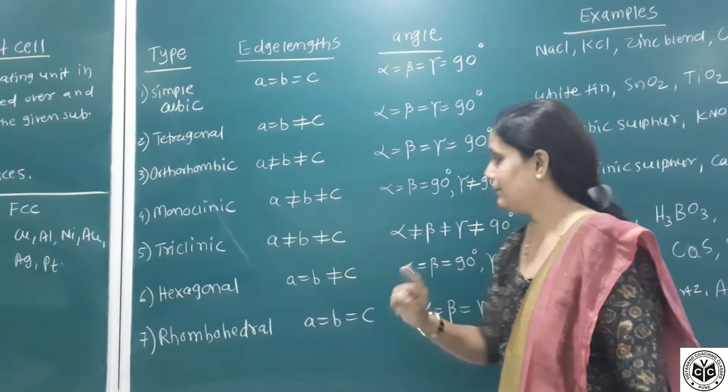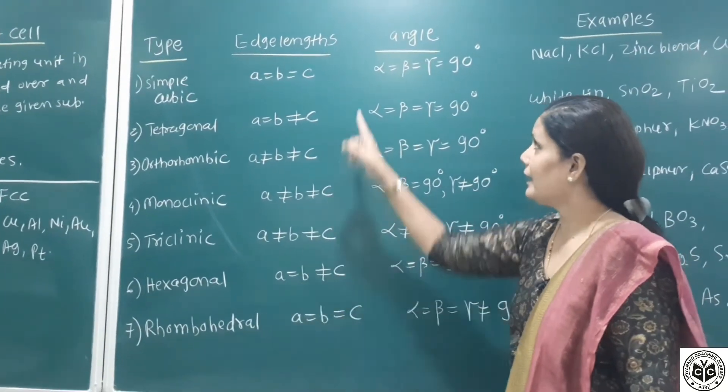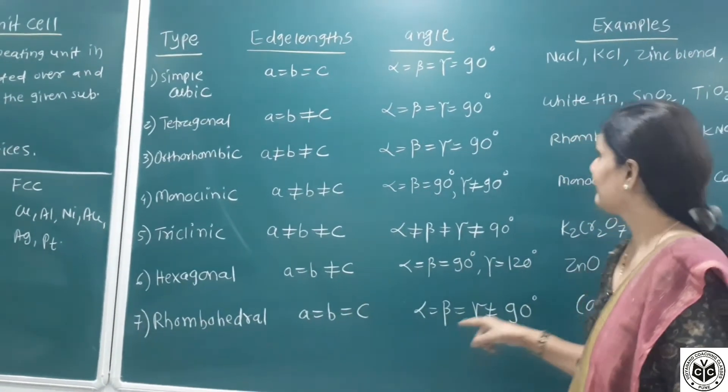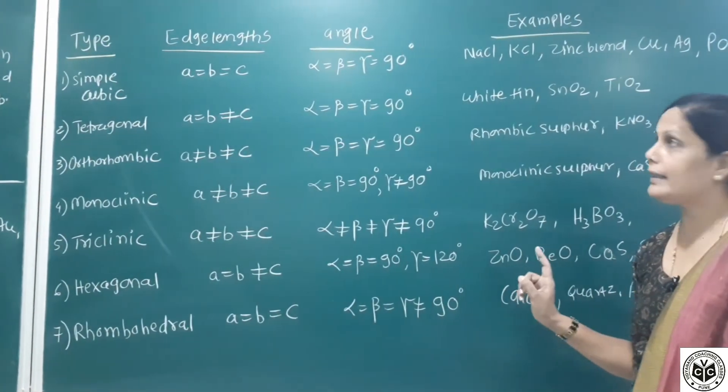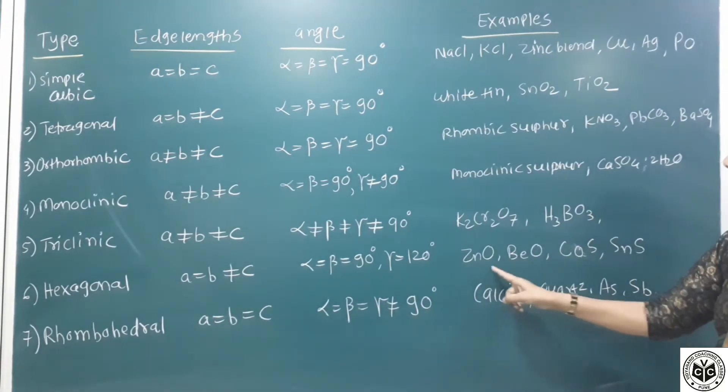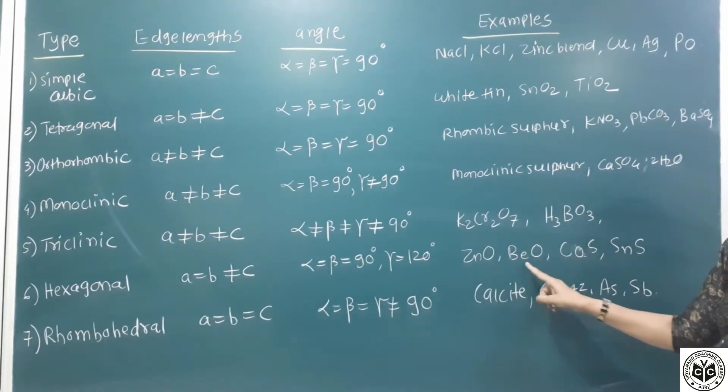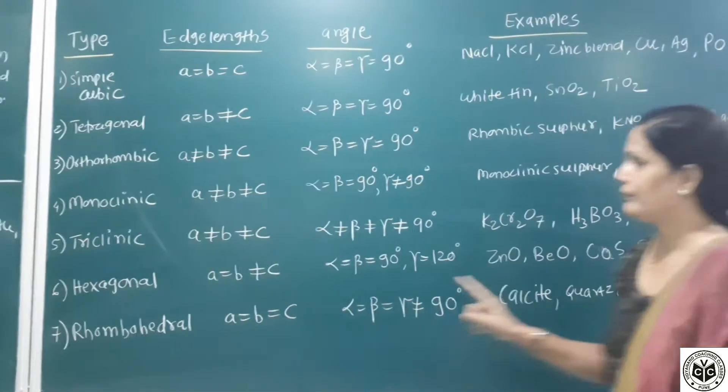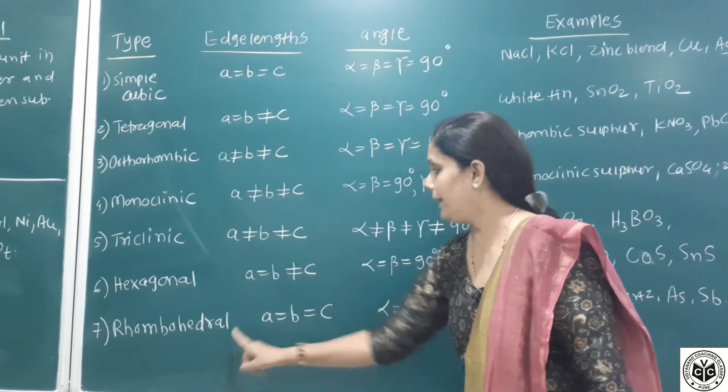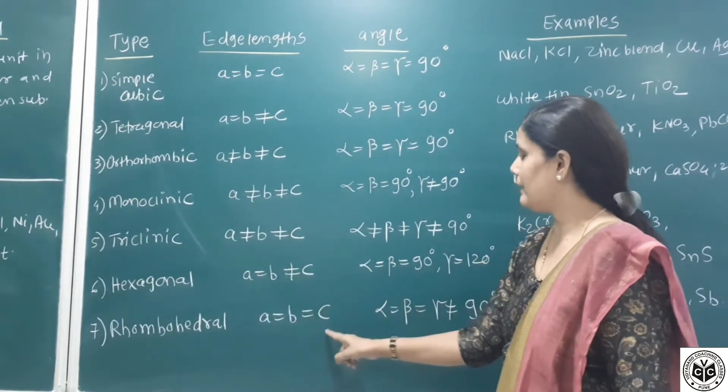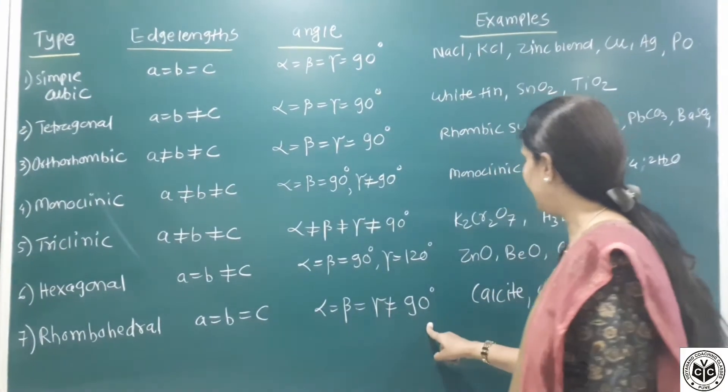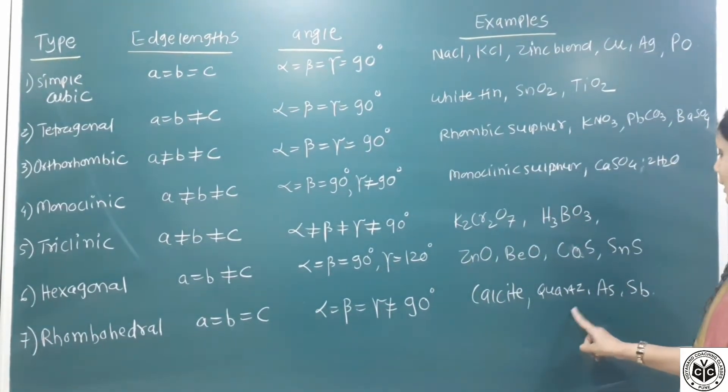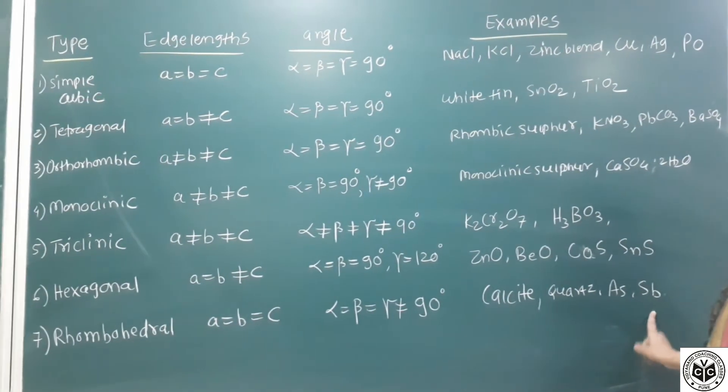Sixth type is hexagonal. A equals B but not equal to C. Angle alpha equals beta equals 90 and gamma equals 120. Examples are ZnO, BeO beryllium oxide, CoS cobalt sulfide, and SnS tin sulfide. Seventh type is rhombohedral. A equals B equals C. Alpha equals beta equals gamma but not equal to 90. Examples are calcite CaCO3, arsenic, and antimony.